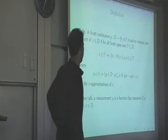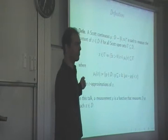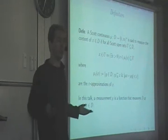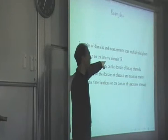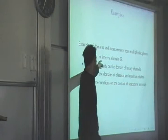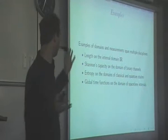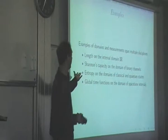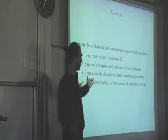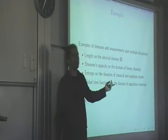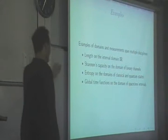Recently, me and him proved a theorem that actually makes it easy, so now it's actually an easy thing to verify — it's just for the first eight years it wasn't. Some examples: if you look at the interval domain, the closed bounded intervals ordered by reverse inclusion, length is a measurement on the domain of intervals. There's a domain of binary channels, and on this domain, Shannon's capacity function is a measurement. There's a domain of classical and quantum states — entropy in both contexts is a measurement. And global time functions in general relativity also define measurements on the domain of spacetime intervals, so it arises in many contexts.